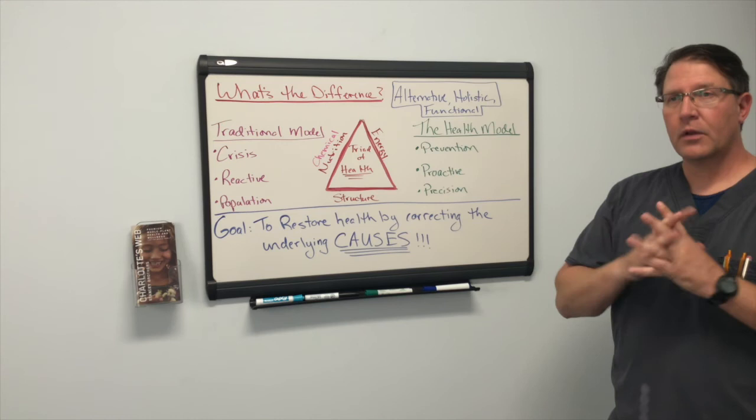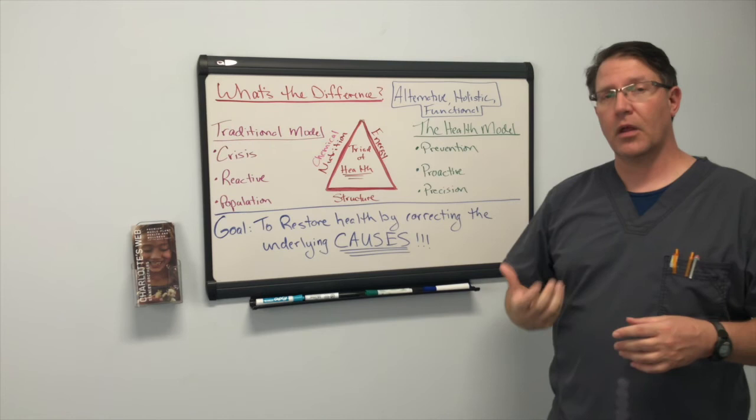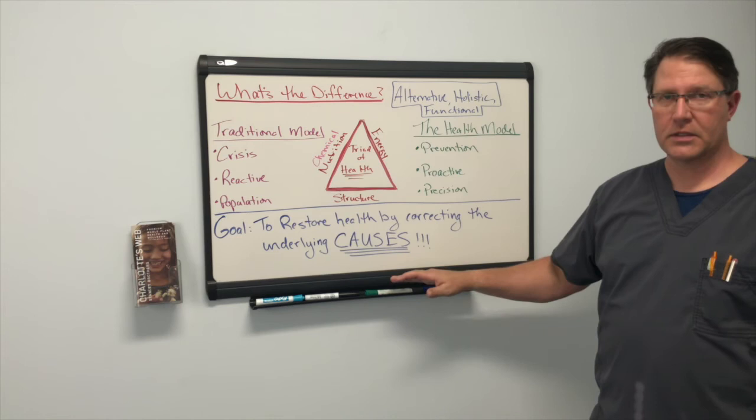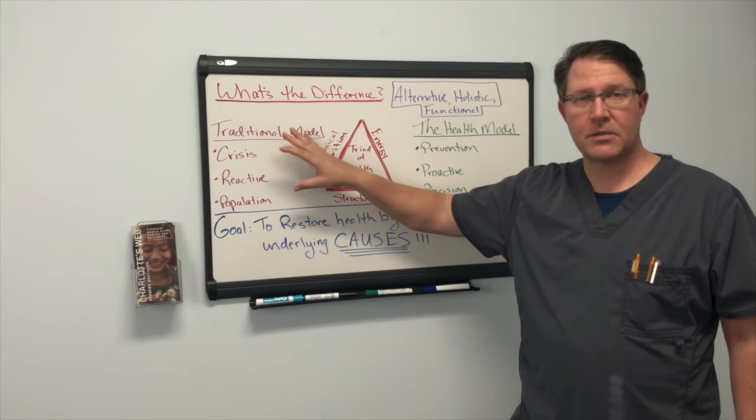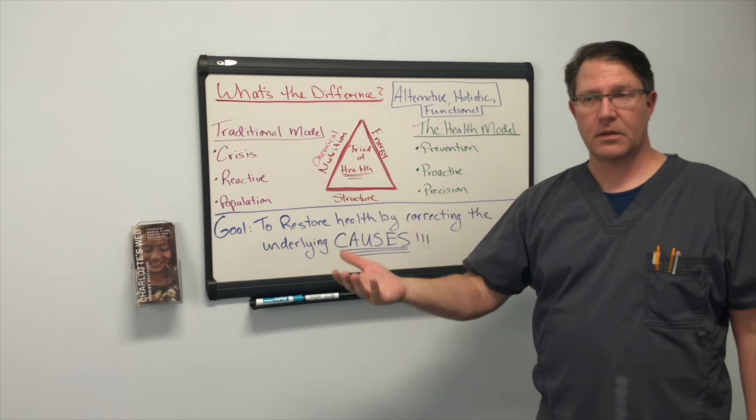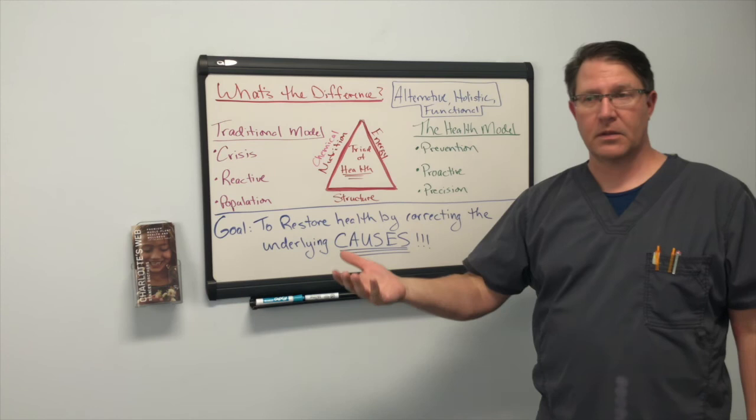The real goal — the underlying purpose of the health model or a holistic or functional approach — is to restore health by correcting the underlying causes. The traditional system is chasing symptoms and medicating based on symptoms and signs. In the health model, we're looking at the underlying causes of those symptoms and trying to correct whatever imbalances that person might be experiencing.